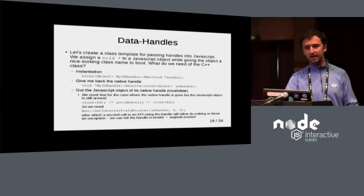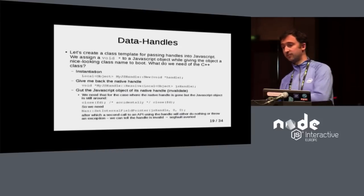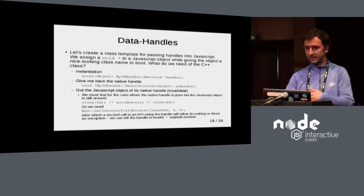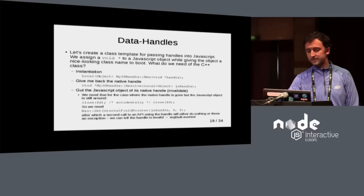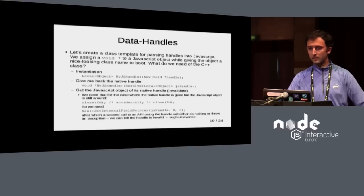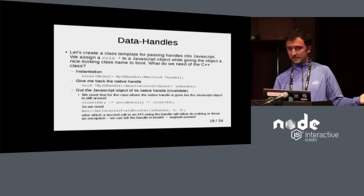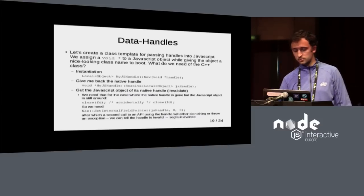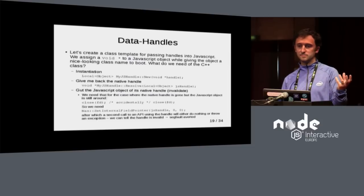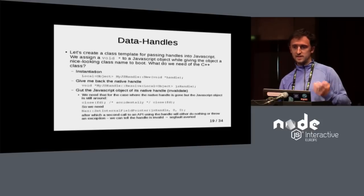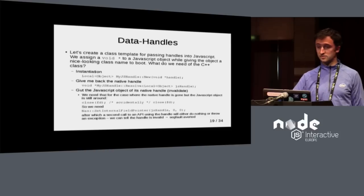For handles I've created a class with three things: instantiation — you get a handle from the library and turn it into something usable in JavaScript that is completely opaque; resolution — give me back my native handle so I can talk to the native library; and scrubbing — mark the handle invalid because I've released the native handle but don't control JavaScript garbage collection. The JavaScript object may still be around, but henceforth it shall be an invalid handle — a plain JavaScript object.